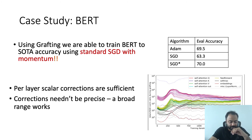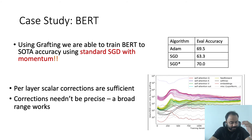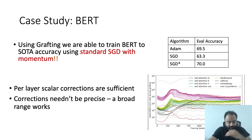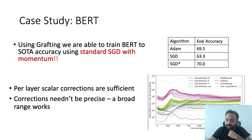As a particular case study, we are able to successfully train the BERT model with a vanilla SGD with Momentum optimizer to state-of-the-art accuracy, achieved by grafting the Adam optimizer over to SGD. To the best of our knowledge, standard SGD with Momentum has been known to fall significantly short of training the BERT model. Notably, we find that only per-layer corrections over SGD are required to achieve SOTA accuracy, as opposed to per-parameter corrections maintained by Adam. Furthermore, these scalar corrections don't need to be very accurate and can be simplified much further than being per-layer.